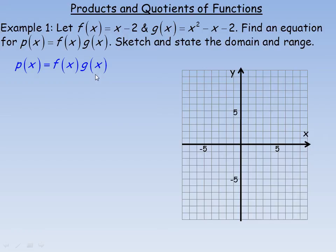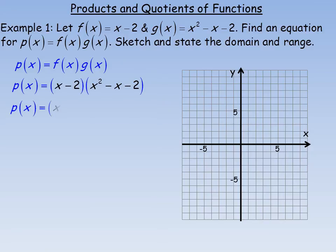So p of x equals f of x times g of x. We'll substitute x minus 2 in place of f of x, and x squared minus x minus 2 in place of g of x. This will factor — to factor x squared minus x minus 2, we look for two numbers that add to negative 1 and have a product of negative 2. Those numbers are negative 2 and 1.